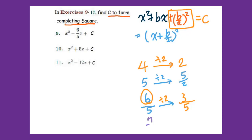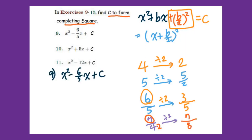Let's do 7/4. How do we divide by 2? Check the numerator first — 7 cannot be divided by 2, so you multiply by 2 in the denominator, which means 7/8. For number 9, we need to add (b/2)² — that means (−6/5) divided by 2. Negative 6 divided by 2 is negative 3, so we get (−3/5)².